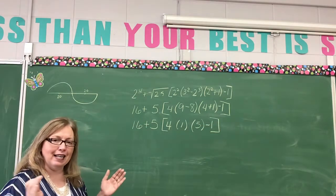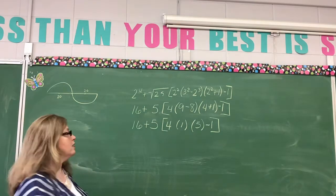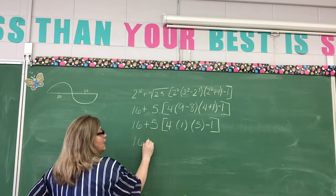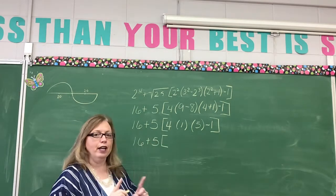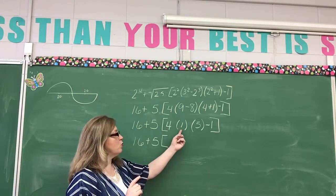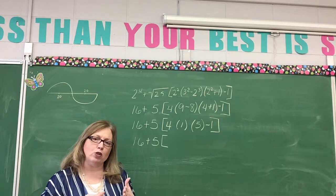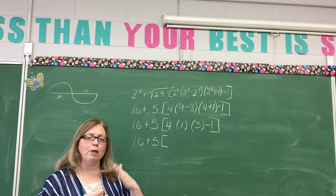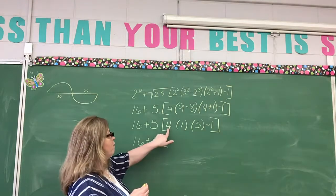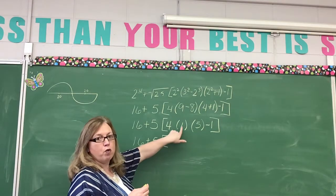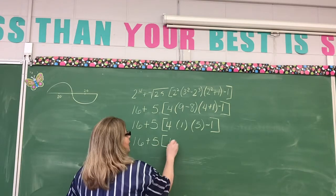Now we stay inside our inclusion symbols. In this case, they're brackets. So we're going to say 16 plus five, and we're going to put a bracket. Now here I have to stop and think. I have four times one times five minus one all inside my bracket. What do I do first? You multiply and divide left to right. Then you add and subtract. So four times one is four. Four times five is 20. 20 minus one is 19.